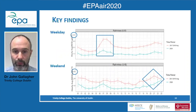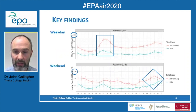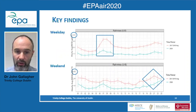On weekends, there was a relatively consistent reduction across the day. Reduced socialising and people moving in and out of the city centre in the evenings led to a significant reduction through taxis, private vehicles, buses, etc., on the weekend evenings.